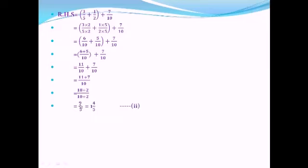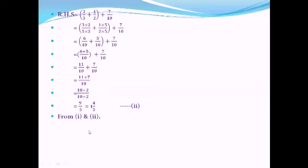Denominators are already the same, so 11+7=18, giving 18/10. Both 18 and 10 are divisible by table 2: 2×9=18, 2×5=10, giving 9/5. Since 9 is greater than 5, this is an improper fraction: 9÷5 = 1 remainder 4, so 1 whole 4/5. Left-hand side answer: 1 whole 4/5. Right-hand side answer: 1 whole 4/5. Left-hand side equals right-hand side — this is the associative property of rational numbers with respect to addition.